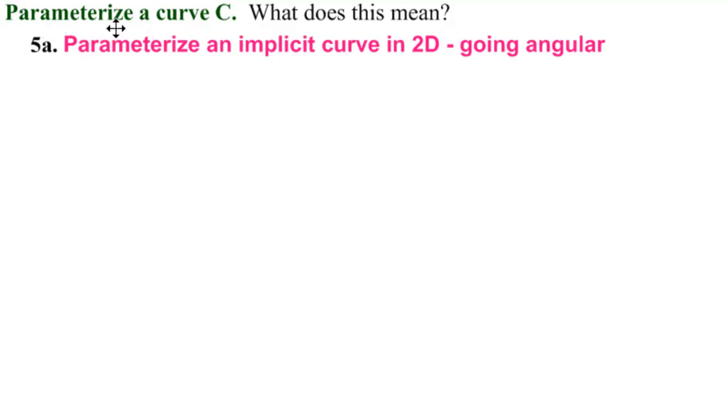The next kind of curve we are going to parameterize is an implicit curve in 2D. This usually means going angular.